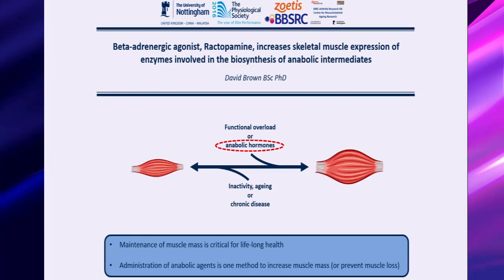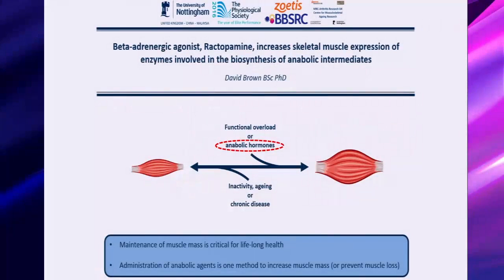Skeletal muscle is a very dynamic tissue. It's very responsive in terms of its mass, particularly to inactivity, aging, and also certain chronic diseases — we see a reduction in muscle mass. On the flip side, functional overload and the presence of anabolic hormones can increase muscle mass. I'm particularly interested in how certain anabolic and pharmaceutical anabolic agents can increase muscle mass, and in particular, how they work and the biology behind that.